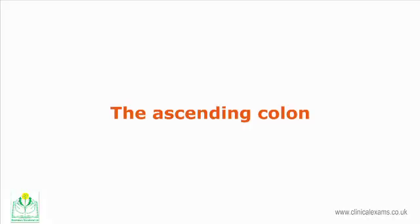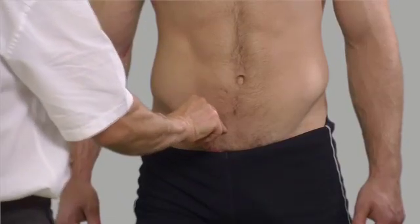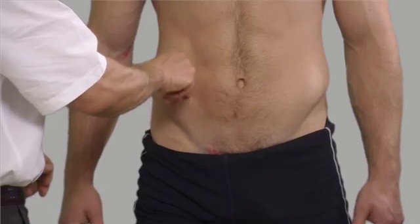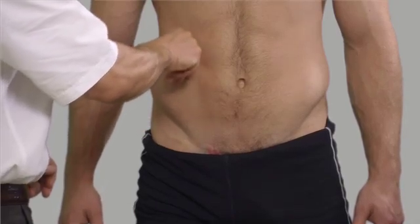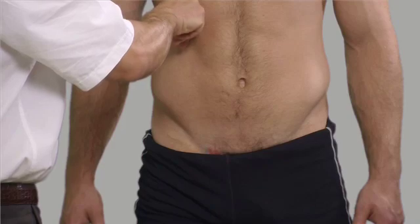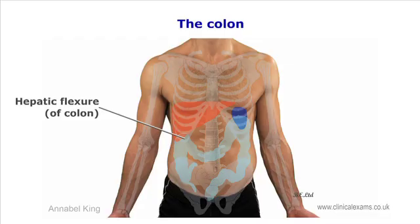The ascending colon starts from the cecum in the right iliac region and ascends retroperitoneally along the mid-clavicular line until the right costal margin at the transpyloric plane. Here it folds backwards and to the left, which is known as the hepatic flexure.